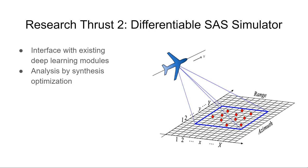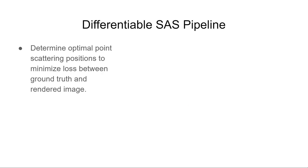Our second thrust of research aims to leverage differentiable programming to make SAS simulation and processing differentiable. Our goal is to create a fully differentiable SAS simulator that has the potential to couple with existing deep learning optimization techniques for a variety of applications, and also perform inverse imaging tasks such as differentiable rendering. Currently, we are developing a differentiable SAS point scattering simulator and beamformer. Next, we demonstrate the potential application of our differentiable SAS simulator for solving inverse imaging problems by using analysis by synthesis.